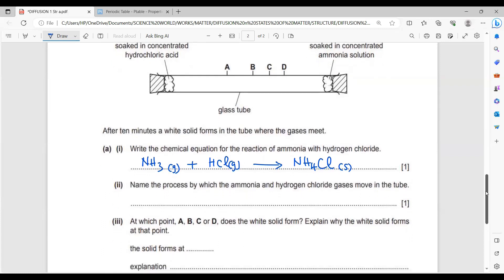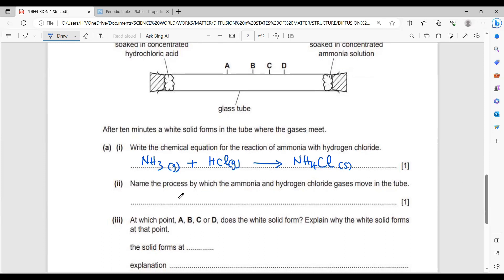Name the process by which the ammonia and hydrogen chloride gases move in the tube. They move by the process of diffusion.